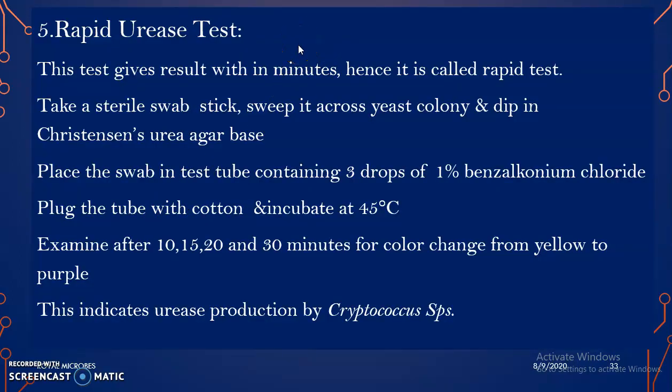Next is the rapid urease test, which gives results within minutes, hence it is called a rapid test. An esterol swab stick is taken, swept across a yeast colony, and dipped in Christensen's urea agar base. The swab is then placed in a test tube containing 3 drops of 1% benzalkonium chloride. The tube is plugged with cotton and incubated at 45 degrees Celsius. Examine after 10, 15, 20, and 30 minutes for color change from yellow to purple, indicating urease production by Cryptococcus species.